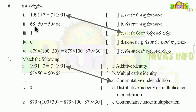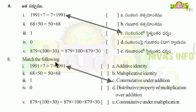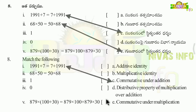Second one: 68 × 50 = 50 × 68. This is also a commutative property — the first number is in second place and second number is in first place, and they are equal. This is Commutative Property under Multiplication.